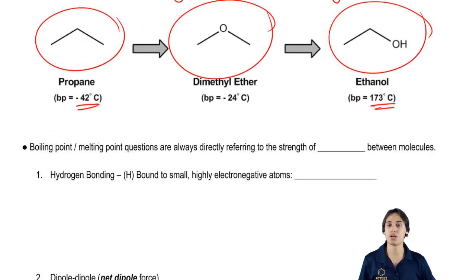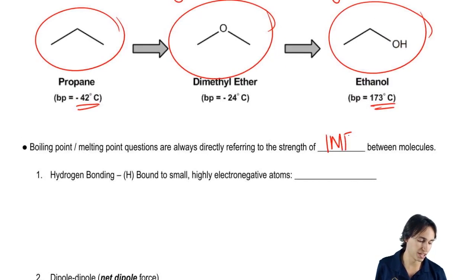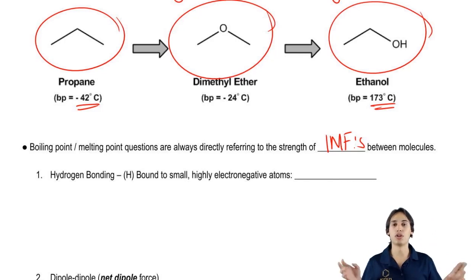So whenever you get questions about boiling points or melting points, that's the way that professors like to ask these questions, it always has to do with the strength of IMFs between molecules. So if a professor ever asks you to list the following molecules in order of increasing boiling point or something like that, you know that they're talking about IMFs.